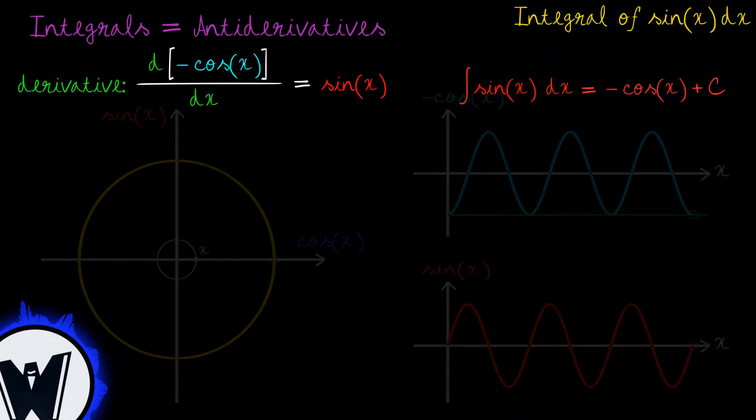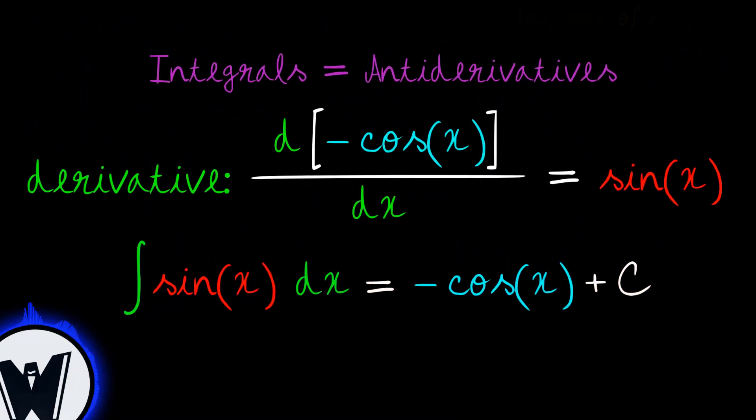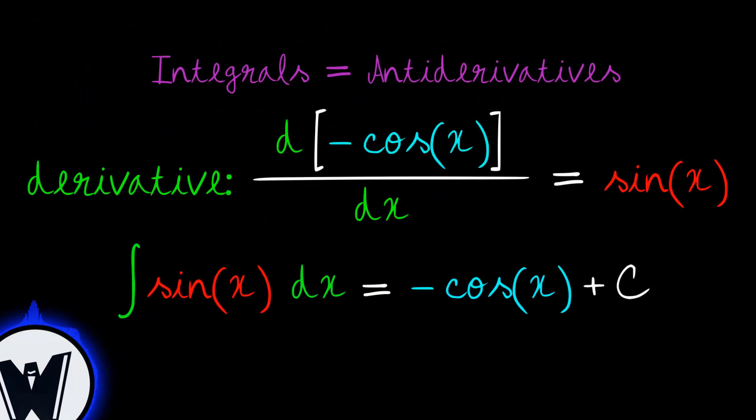By doing this inverse operation, we can explain the outcome of the integral of sine of x. If the derivative of negative cosine of x is sine of x, then the antiderivative of sine of x is negative cosine of x plus some constant of integration.